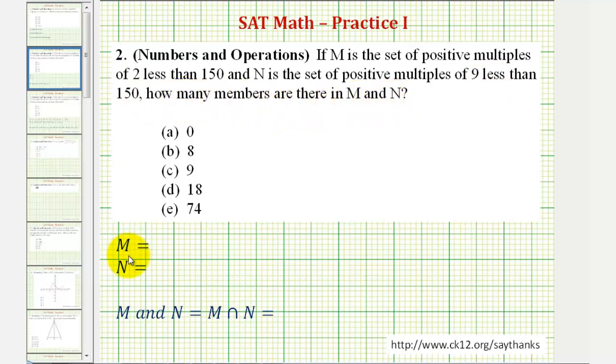So again, M is a set of positive multiples of two less than 150, and N is a set of positive multiples of nine less than 150. To get a better understanding of what's happening here, let's start by listing out multiples of two and multiples of nine that are positive and less than 150.